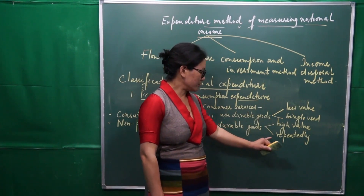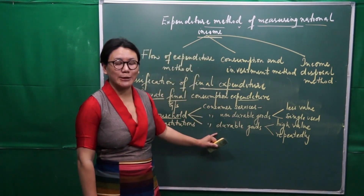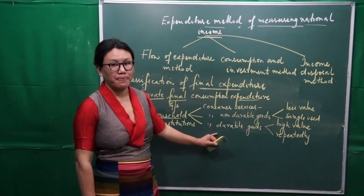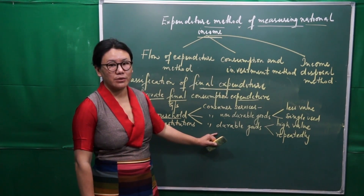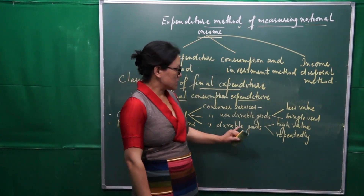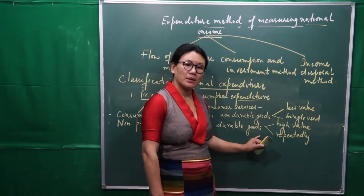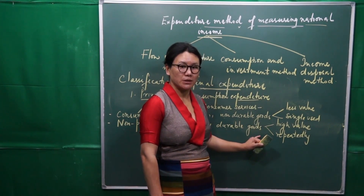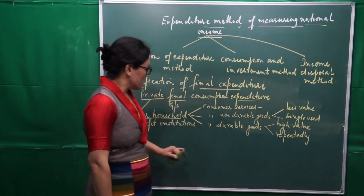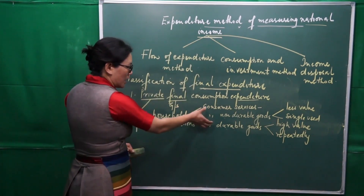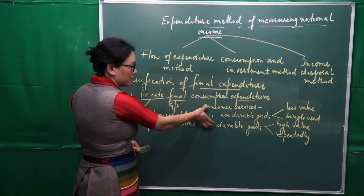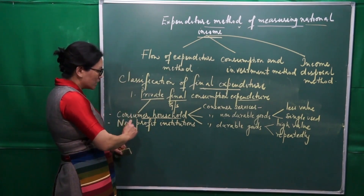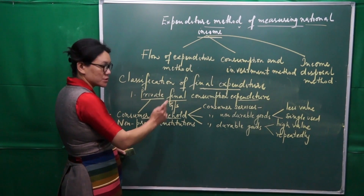Examples of durable goods include electronic gadgets and cars. These durable goods can be used for many years. These are examples of expenditure incurred by consumer households on durable goods.